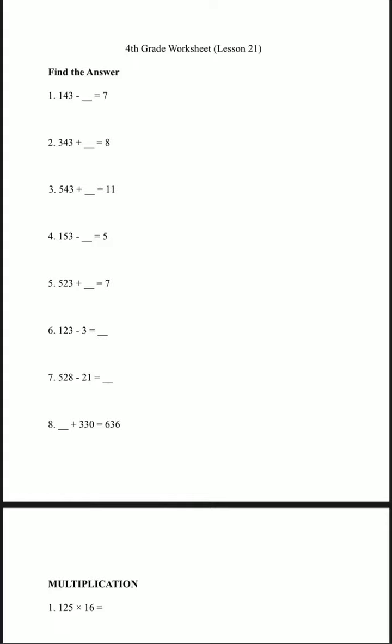Let's start with number 1. Number 1 is 143 minus blank equals 7. Let's change the missing number to x. So 143 minus x equals 7, and we need to make x by alone.